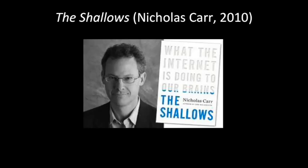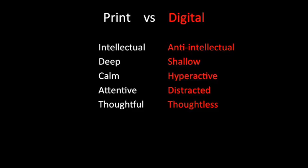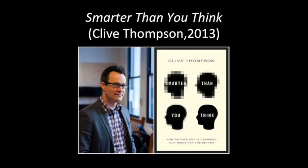When you read Bauerlein and Carr back to back, what struck me was that while their tone was quite different, evaluatively they're very similar. They use the same kinds of adjectives — students on print: intellectual, deep, calm, attentive, thoughtful. Digital: anti-intellectual, shallow, hyperactive, distracted, thoughtless. In fact, that's the name of Carr's book, The Shallows. Obviously, not everybody agrees. In 2013, Clive Thompson, the head technology writer for the New York Times, wrote Smarter Than You Think — how technology is changing our minds for the better — with a middle chapter all about tools to extend our ability to read and make meaning in text.